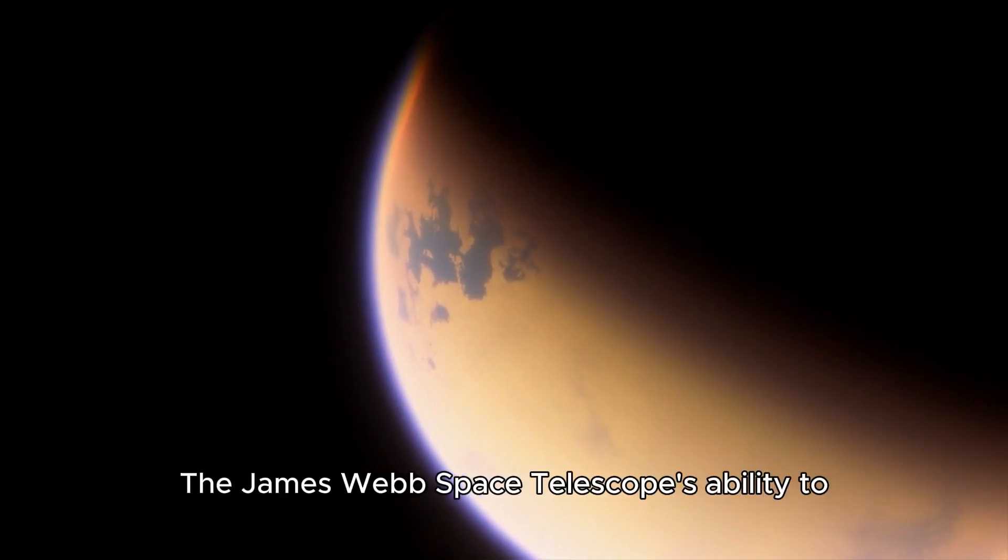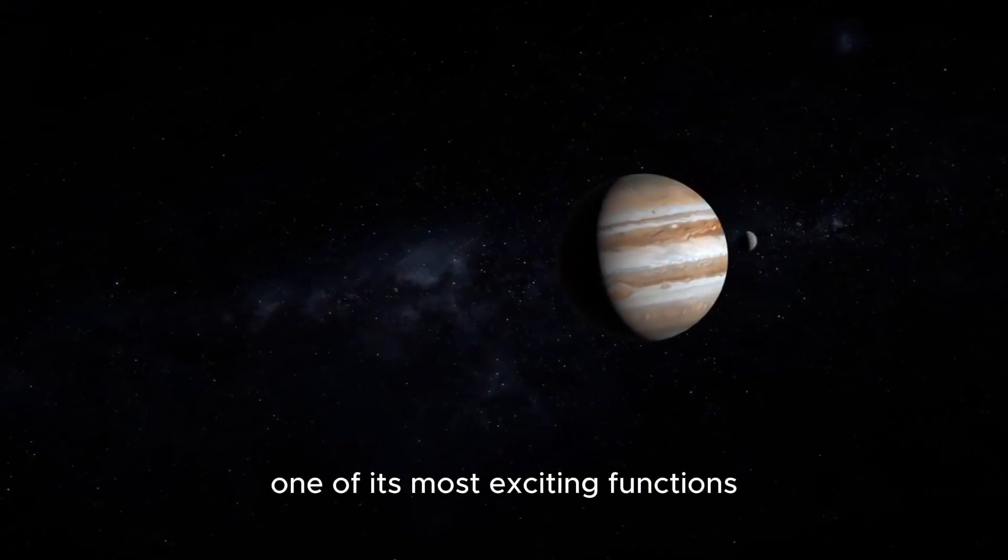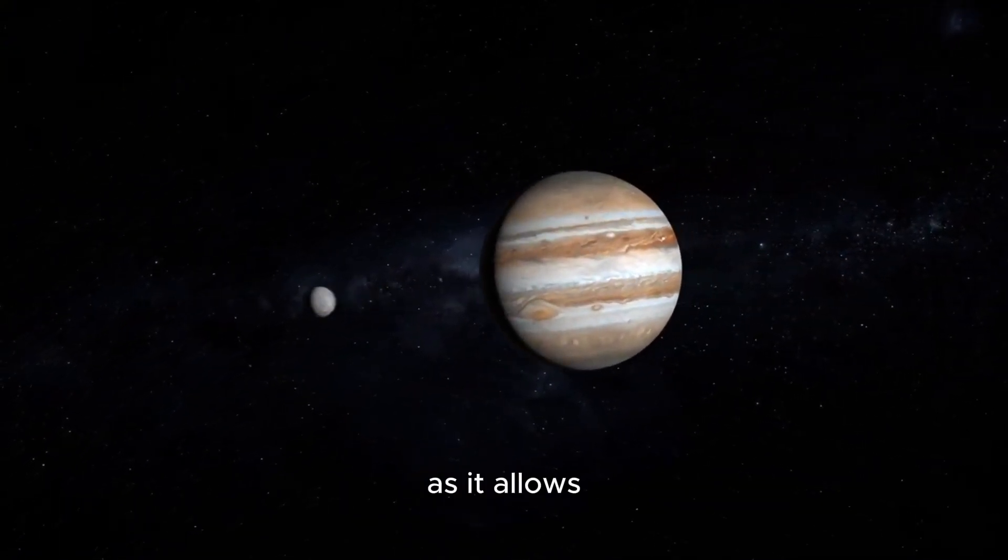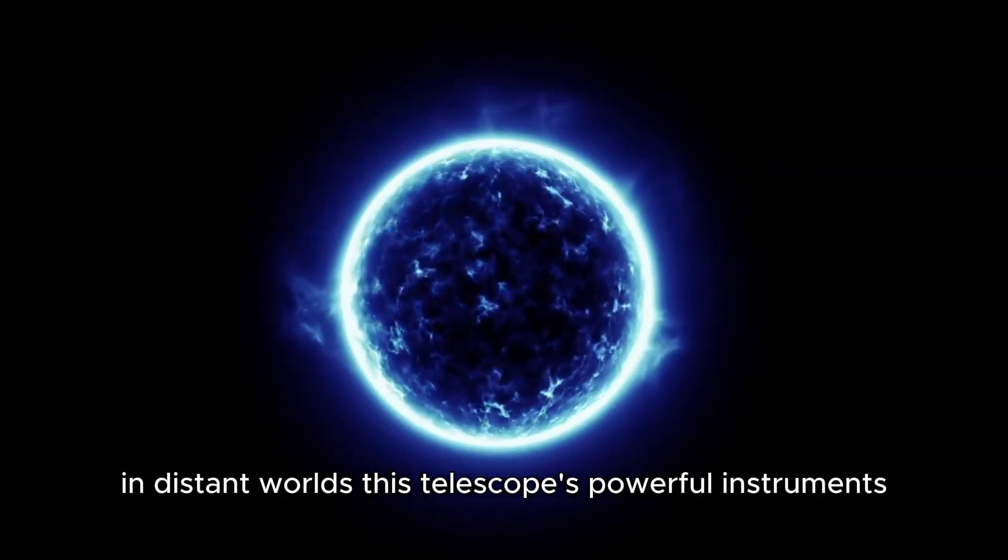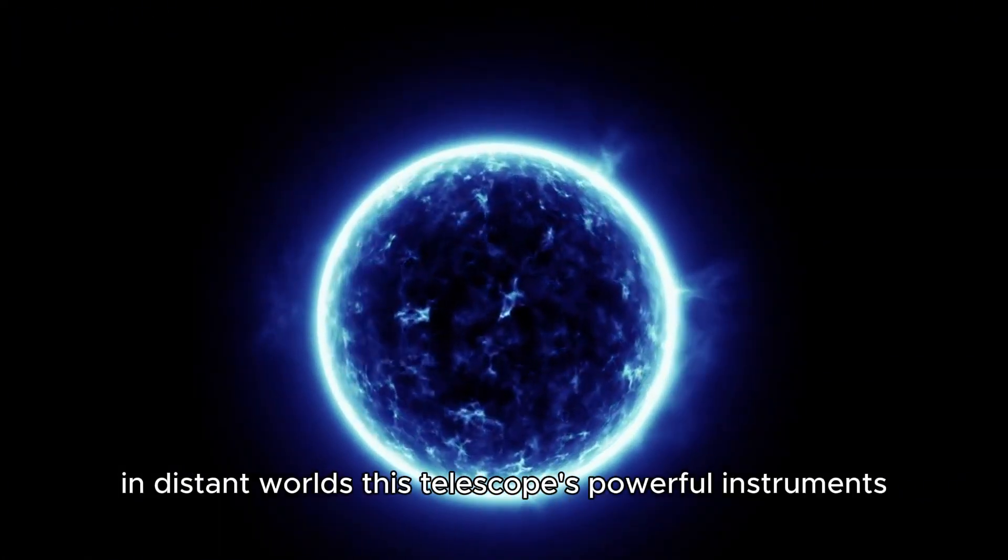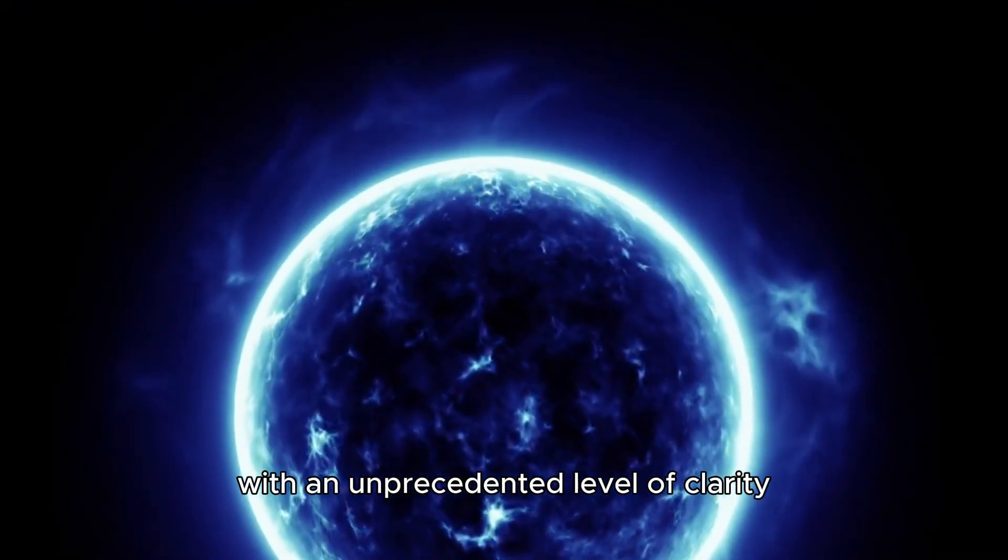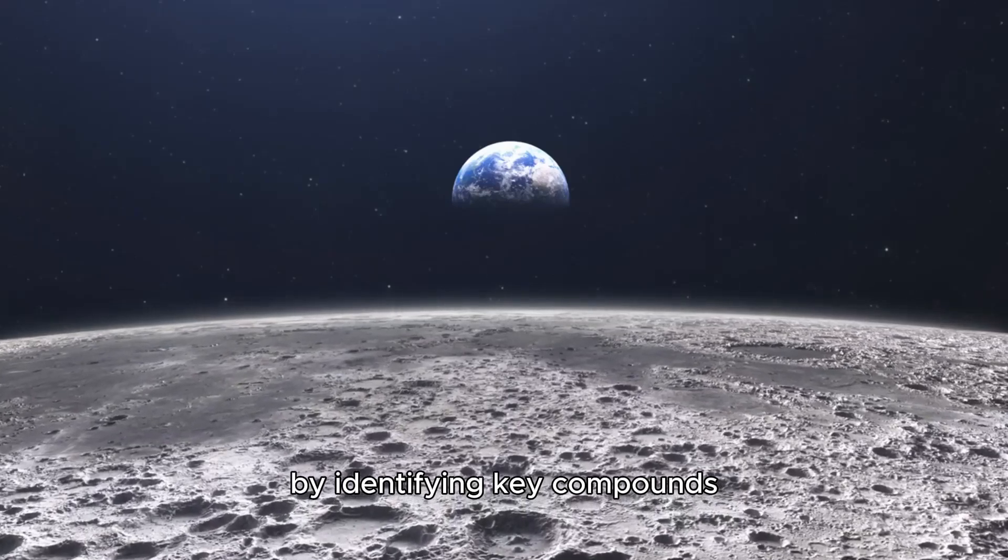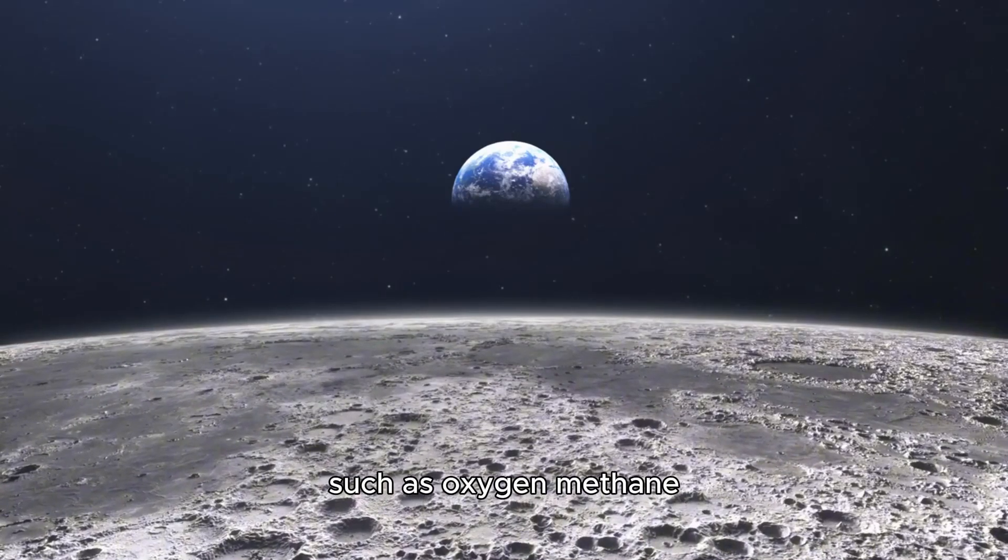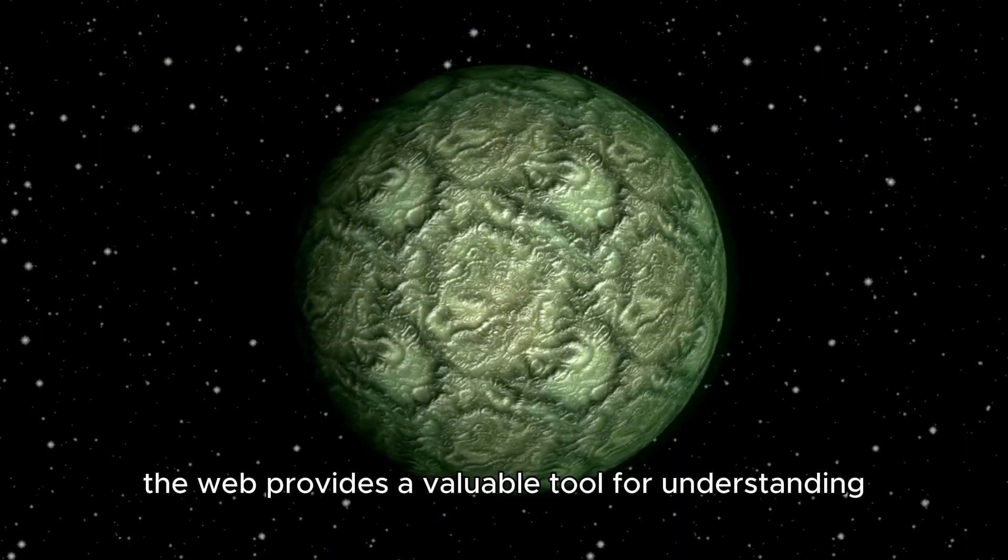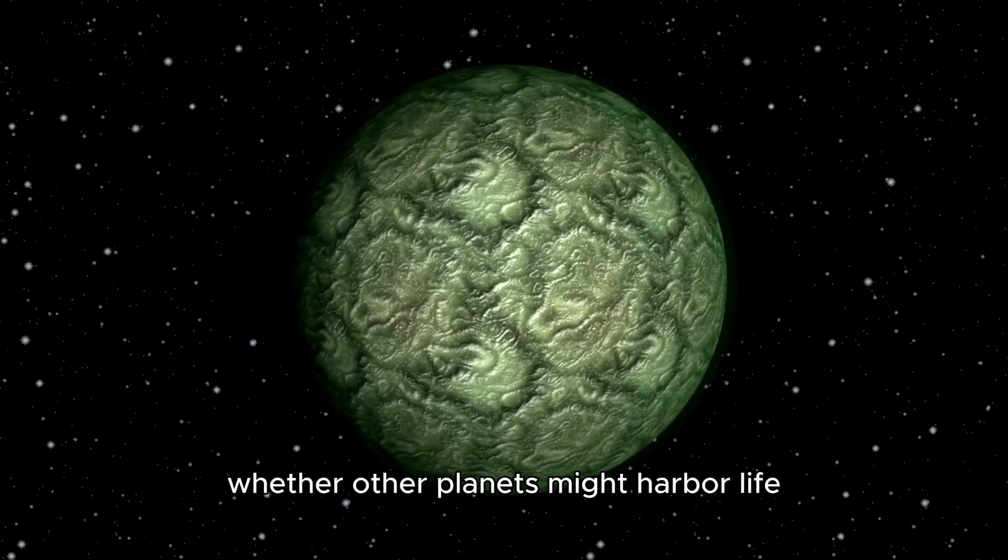The James Webb Space Telescope's ability to investigate the atmospheres of exoplanets is perhaps one of its most exciting functions, as it allows scientists to search for subtle hints of life in distant worlds. This telescope's powerful instruments enable us to observe planets and their atmospheres with an unprecedented level of clarity. By identifying key compounds that could indicate the presence of life, such as oxygen, methane, and water vapor, the Webb provides a valuable tool for understanding whether other planets might harbor life.